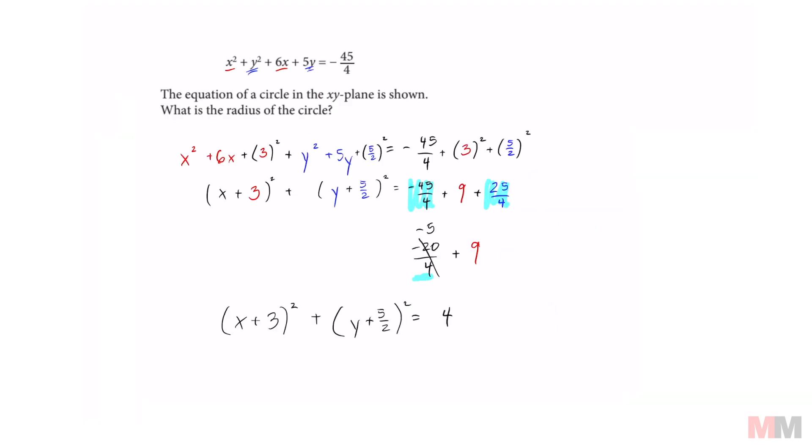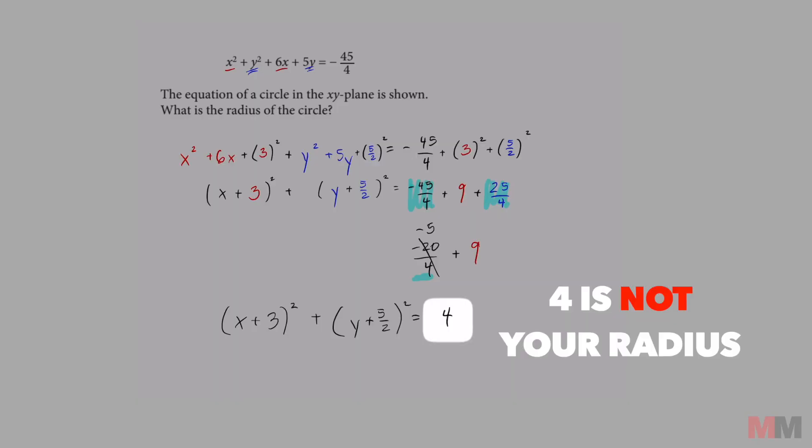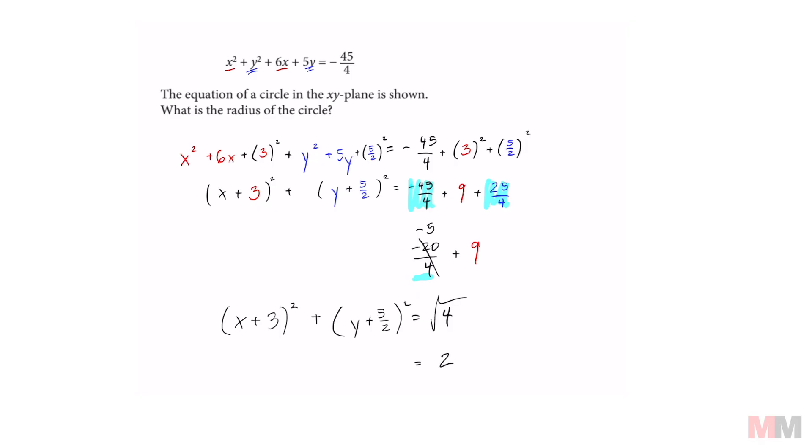But please do not do all this work just to put 4 in there. Because in the equation of a circle, the radius is squared. So we're going to have to take the square root of 4, which is going to be 2. And that is the full equation of that circle, where 2 is going to be my radius.